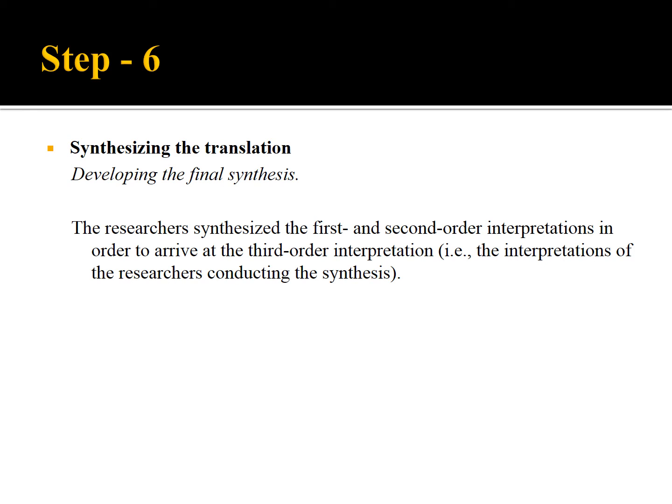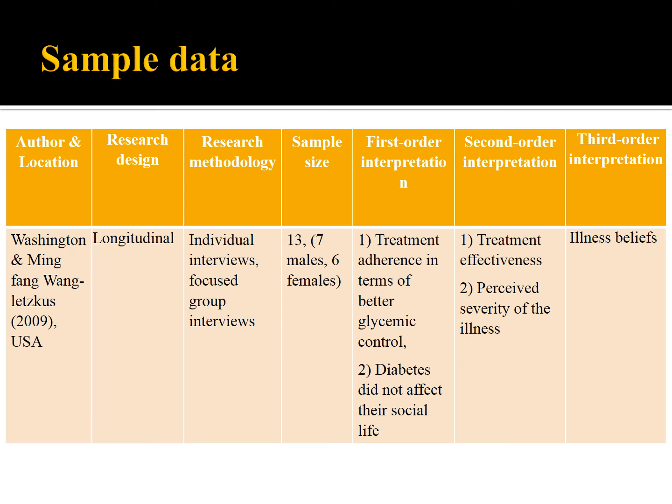Next, we move on to the sixth step: synthesizing the translations. In this step, we arrive at the third order interpretation by synthesizing the first order and second order interpretations of each study. This third order interpretation represents the interpretation of the researcher who synthesized the findings. Here is the sample data which represents the third order interpretation, giving a clear idea about how we have arrived at first order, second order, and third order interpretation — which is considered to be the findings of this current study.